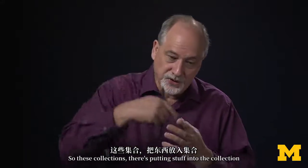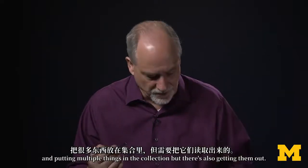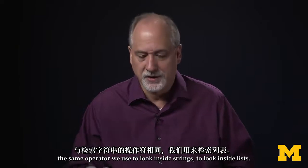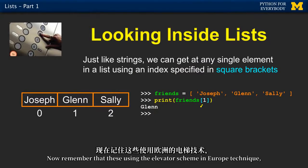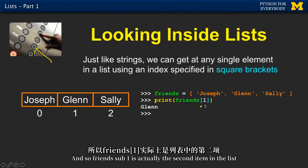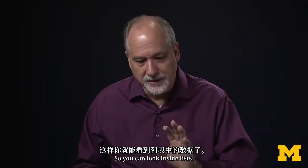There's putting stuff into the collection, but there's also getting things out. We use the index operator — the same operator we use to look inside strings — to look inside lists. I read this in my mind as 'sub,' so this is 'friends sub one.' Using zero-based indexing, the first one is zero and the second one is one, so 'friends sub one' is actually the second item in the list — and that's how Glenn ends up getting printed out.